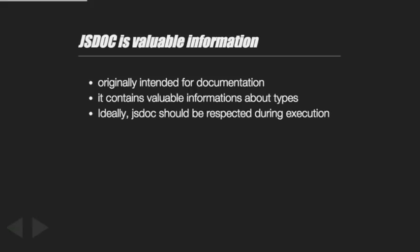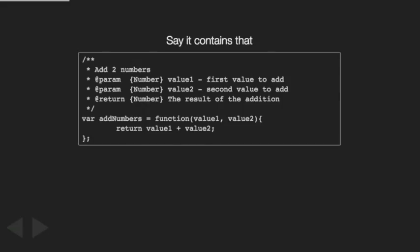JSDoc is quite valuable - it's originally oriented to generate documentation, but you can see interesting things here. The parameters tell you that value one is supposed to be a number. If it's a string or an instance of an object, if it is not a number, this is a mistake you have to detect.